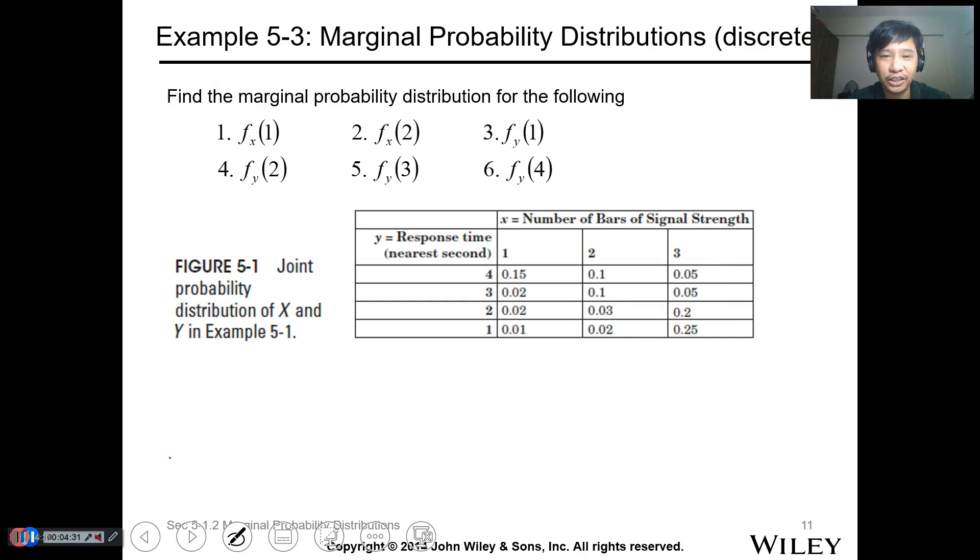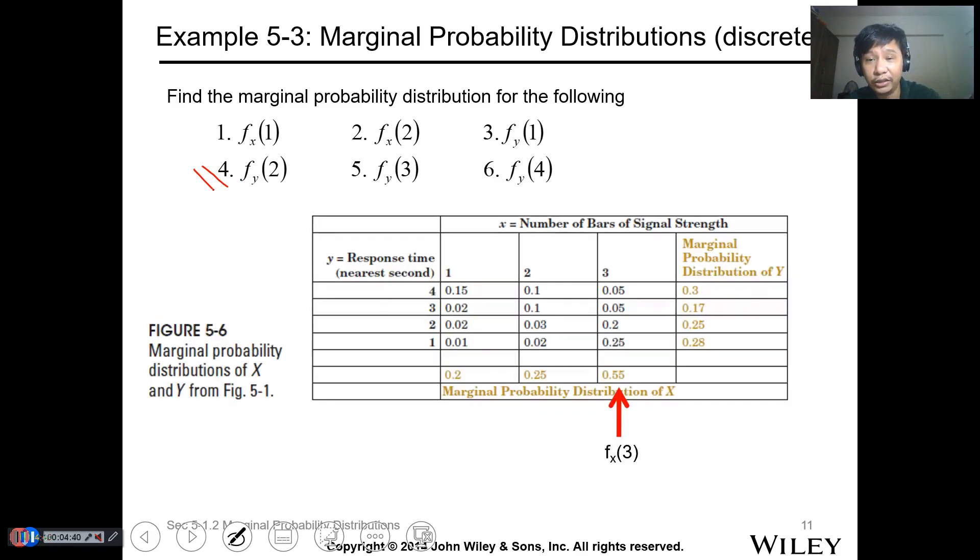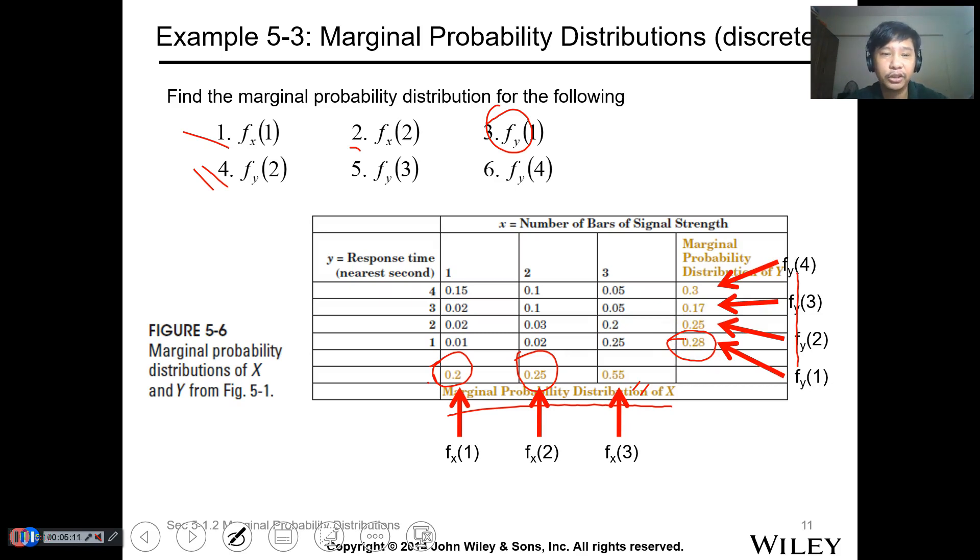This is for discrete random variable. Now, let's find the probability distribution. For this table, we summed the column. This is the marginal probability distribution for x, and this is for y value. When you get f(x) of 1, that's 0.2. For f(x) of 2, that's 0.25. The f(y) of 1 is this one, and so on and so forth. You just get the sum of the column and row to determine the marginal probability.